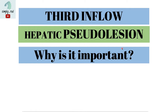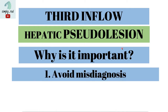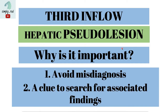Why is it important? It's important to understand pseudolesions in order to avoid calling them true lesions. Second, to understand that the presence of third inflow vessels represents potential areas of collateral flow. Seeing an abnormality in a third inflow area should prompt us to check for other abnormalities.